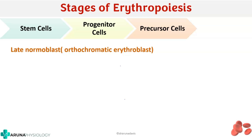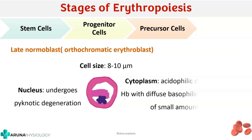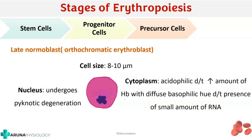Next is the late normoblast stage, also called the orthochromatic erythroblast stage. Cell size decreases further to about 8 to 10 micrometers. The nucleus undergoes pyknotic degeneration. The cytoplasm is more acidophilic than basophilic due to increased hemoglobin, with only a slight diffuse basophilia from a small remaining amount of RNA. The nucleus continues to shrink and is finally extruded out of the cell — this is how RBCs lose their nucleus.